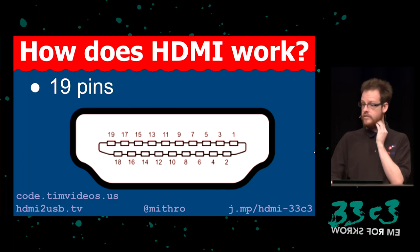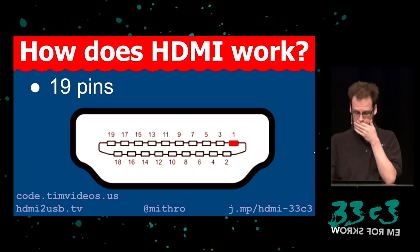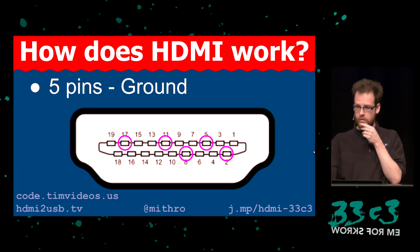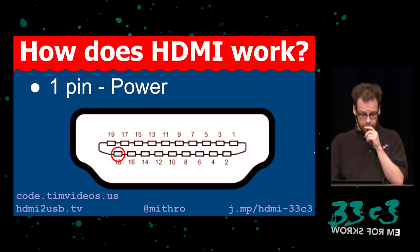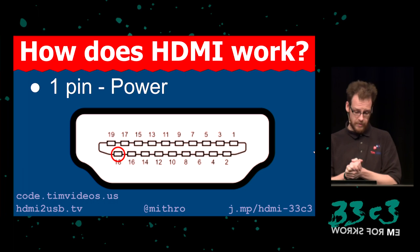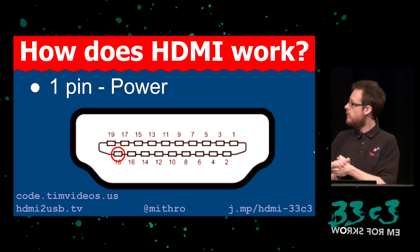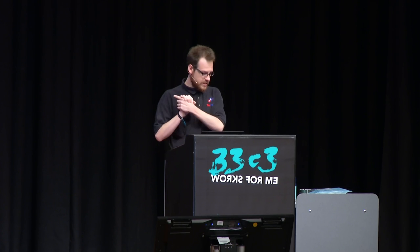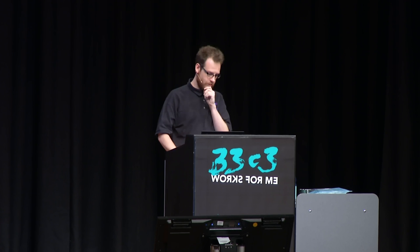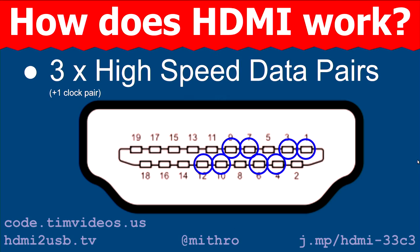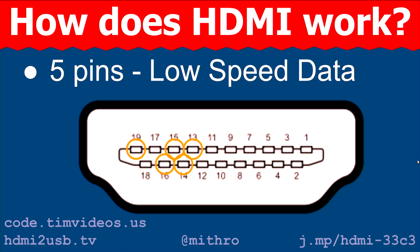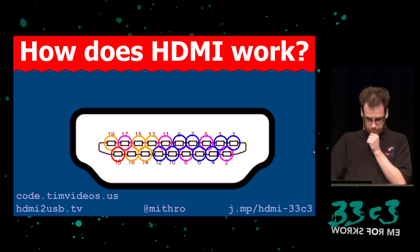What do all these connectors do? There is ground, there is power — it gives you 5 volts with about 50 milliamps, which is not much. You can't do much with that, though it can be used by a converter to power a microcontroller. Some Chinese boards try to draw an ampere from it — that's not a good idea. There are 3 pairs to transmit high-speed data and they share a clock pair. Then there are 5 connectors to transmit low-speed data.